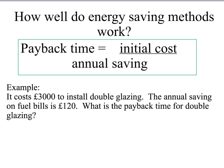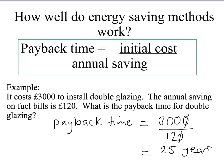Let's have a look at an example. If it costs £3,000 to install double glazing, the annual saving on fuel bills is £120. What's the payback time for double glazing? So to work that out, we're calculating the payback time. The initial cost is £3,000. The annual saving is £120. We plug that into our calculator, cancel the zeros there, plug that into our calculator, and we get an answer of 25 years. This is the only equation that you're not given in that front cover on your exam paper, so you do need to know this one.